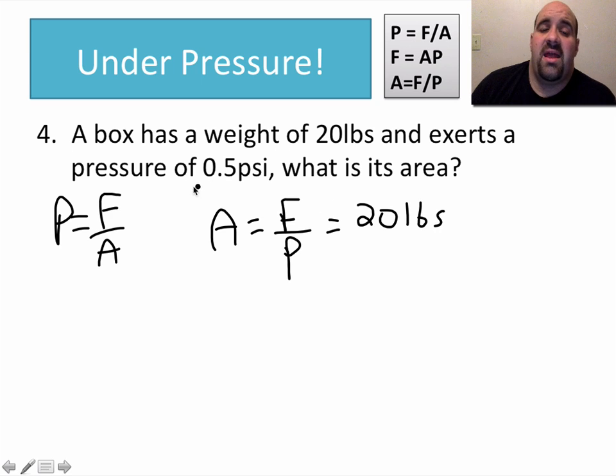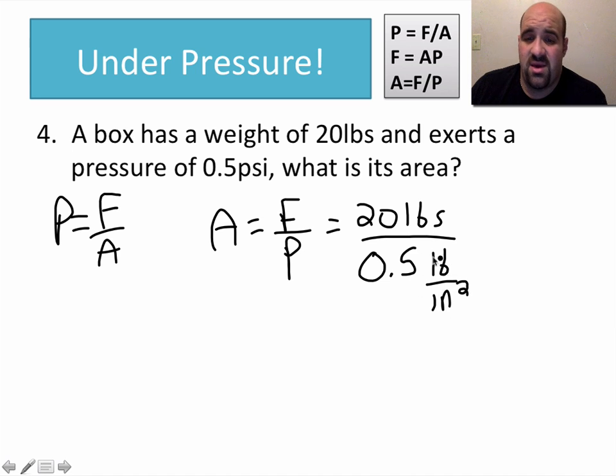In this case, the box has a weight of 20 pounds. So the force equals 20 pounds. And it has a pressure of 0.5 pounds per inch squared. If you're good with your fractions, you know that these pounds cancel and you're ending up with inches in the top. But other than that, just remember, area has to be in inches squared. 20 divided by 0.5 will equal 40 inches squared. So that's all you do when solving pressure problems.